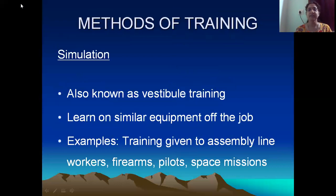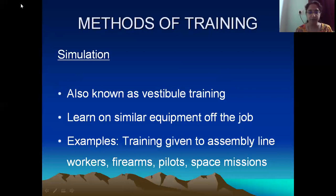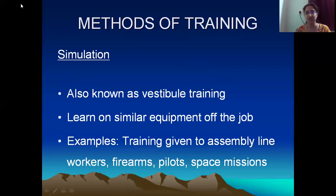The third technique is something called simulation, also known as vestibule training, where employees learn on similar equipment — equipment similar to what they will be using on the job. But this makeshift equipment is located in a facility away from the place of work. When is simulated equipment used? It is equipment similar to the actual equipment used on the job, but it is not the actual one — it is just a model of what people will be using.